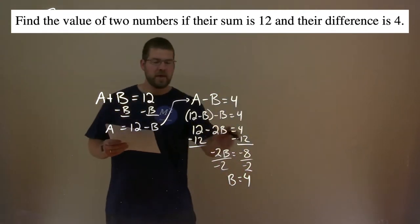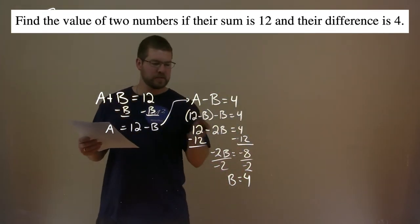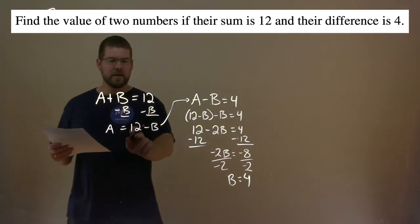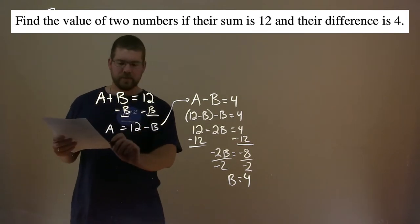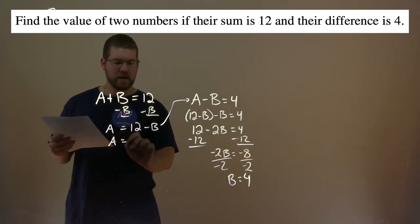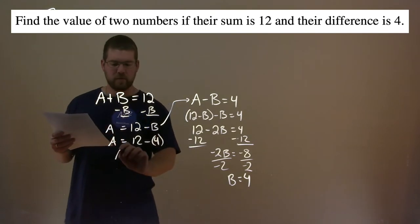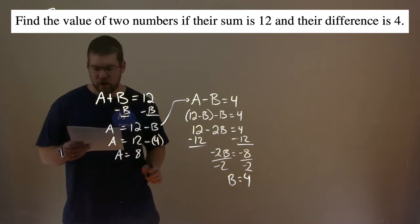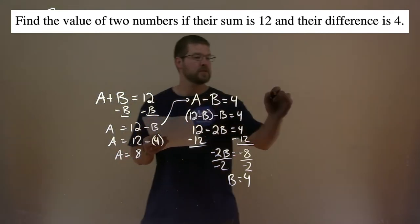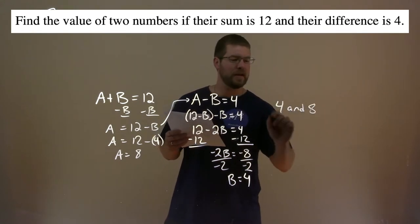With that information, we plug it into one of our equations and solve for A. We can use the first one that was adapted: A equals 12 minus B, which is 4. 12 minus 4 is 8. So our two numbers are 4 and 8.